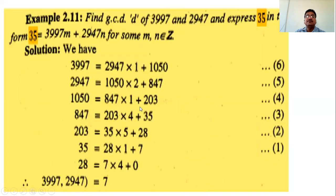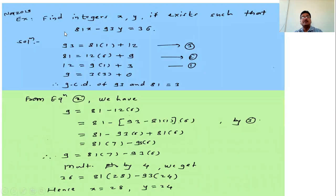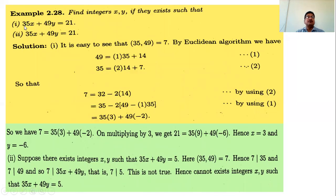Here is a new type of problem: find integers x and y such that 35x + 49y = 21. First find GCD(35, 49). Divide 49 by 35 — quotient 1, remainder 14. Then divide 35 by 14 — quotient 2, remainder 7. Then divide 14 by 7 — quotient 2, remainder 0. Therefore GCD(35, 49) = 7.